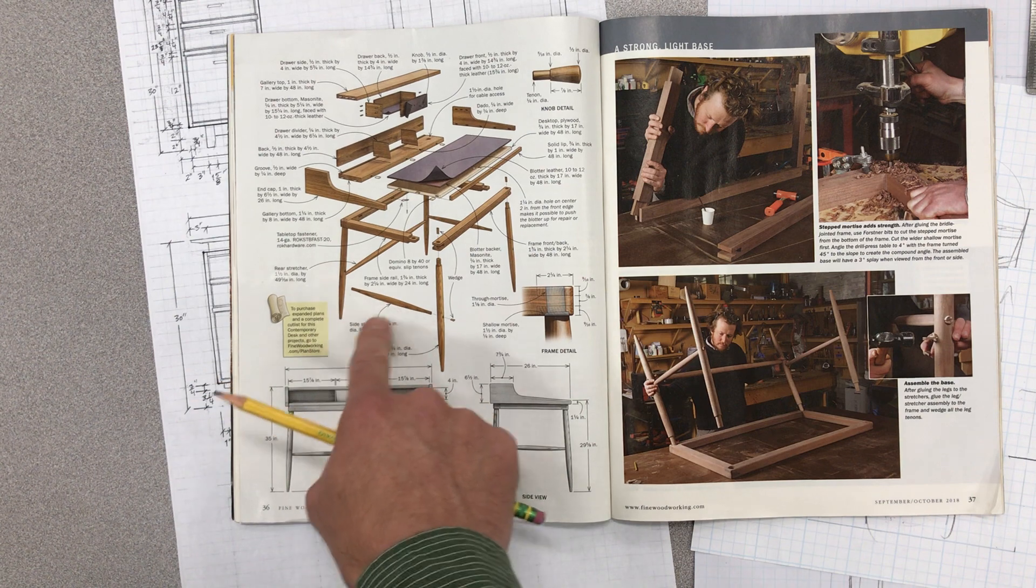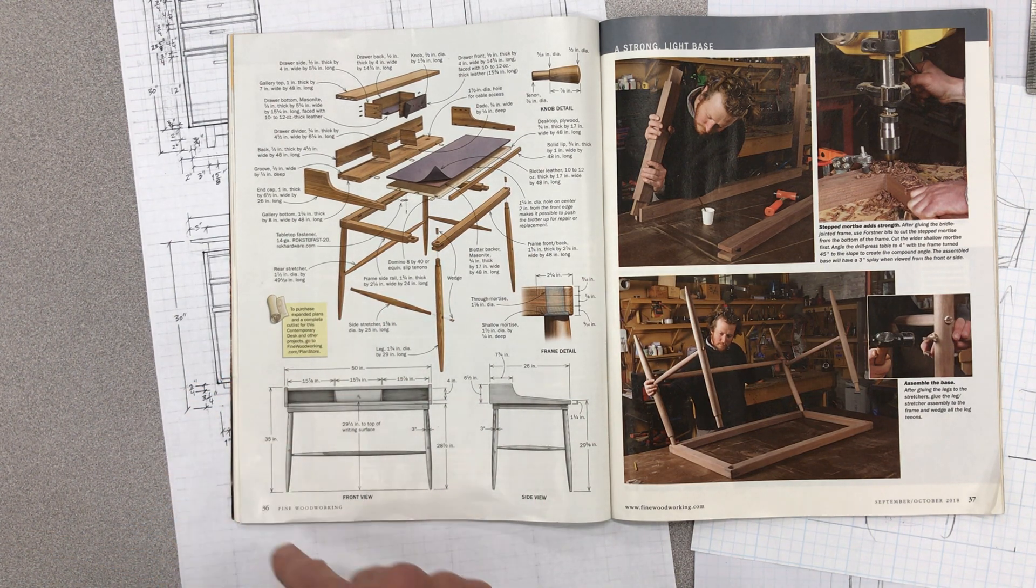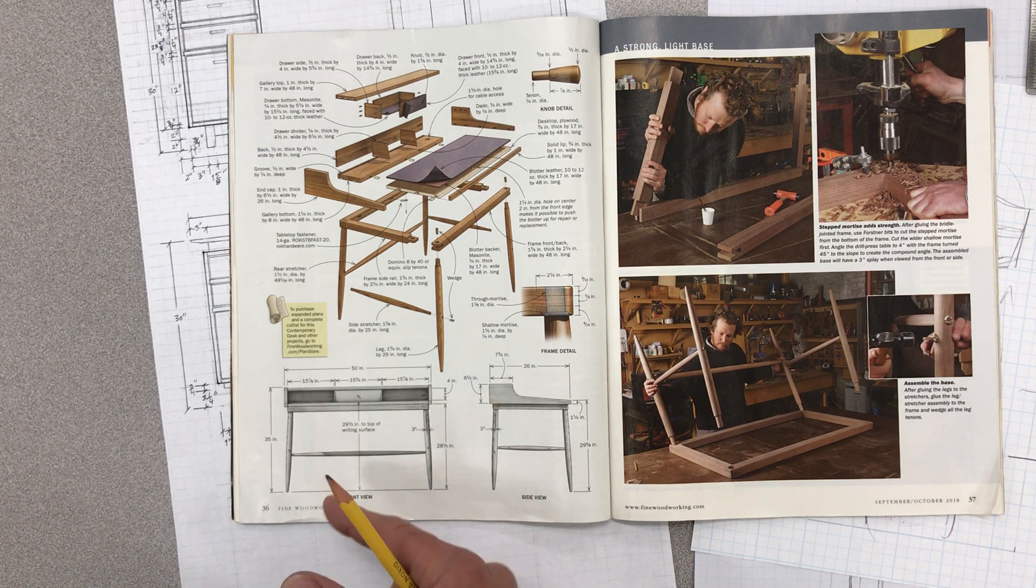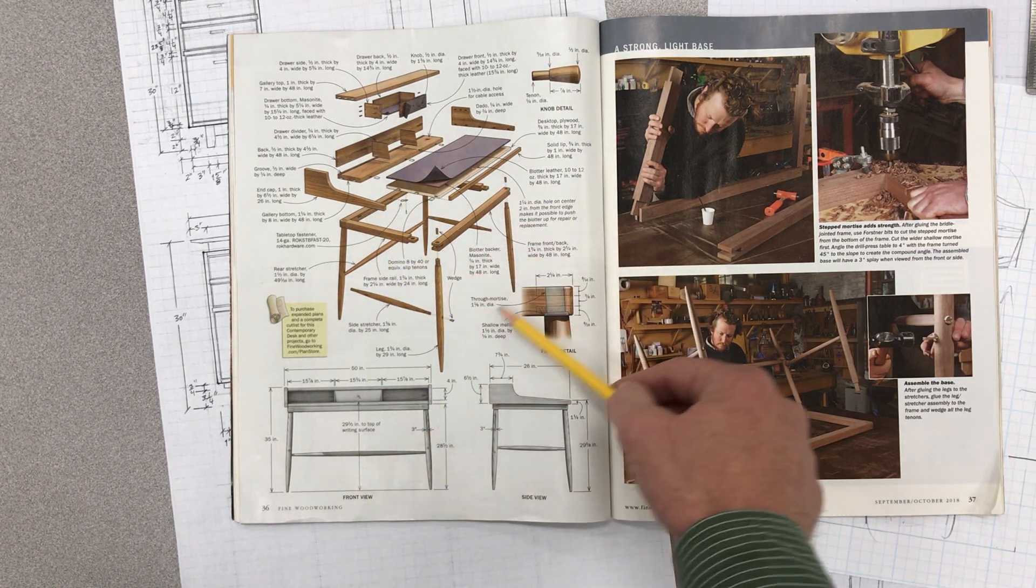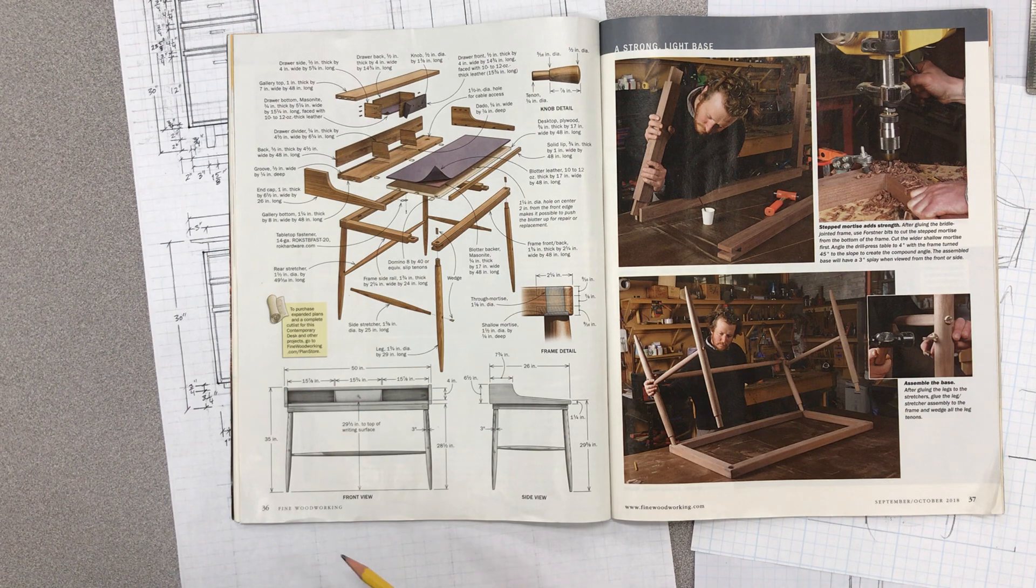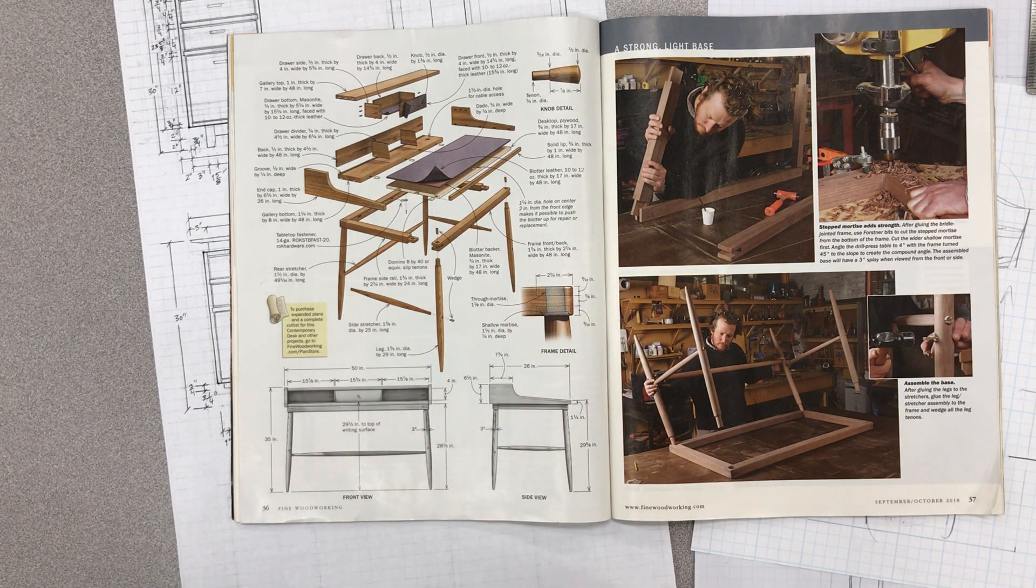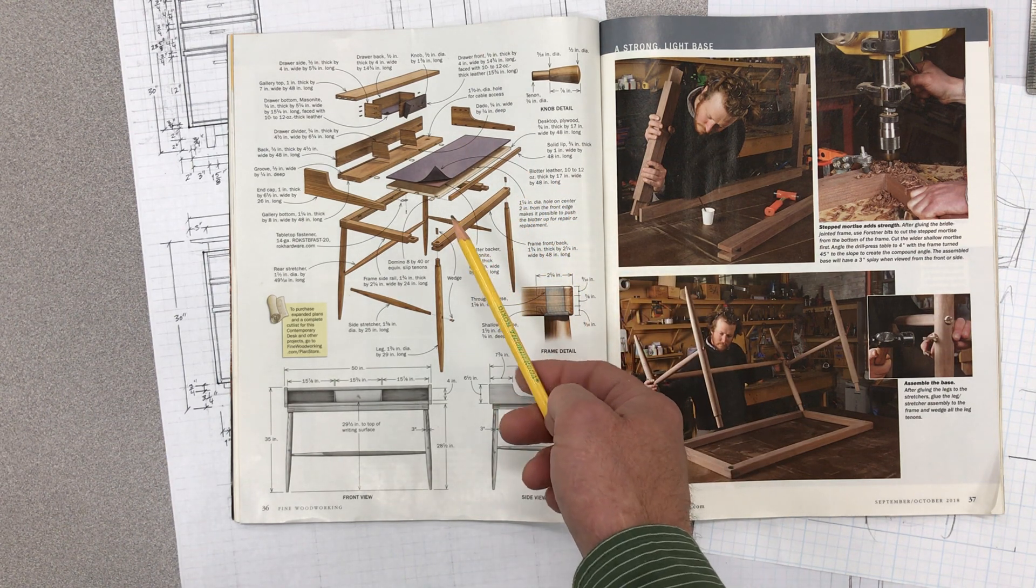There's not a top view here, I think for the same reason we didn't do one on this drawing—because the top doesn't give you much more information than what you already have. Instead, they've given you this exploded view, which is fantastic. You can see every piece, how it goes together. It's full of information, and I wish we could draw that.